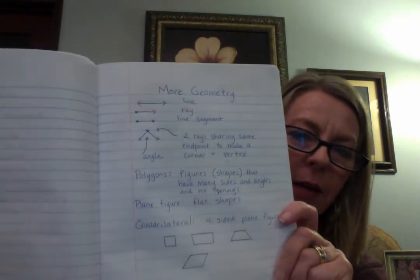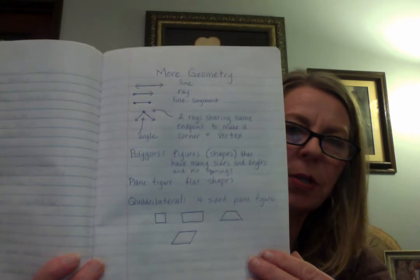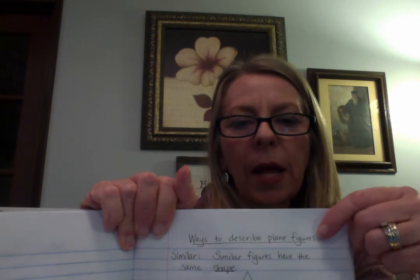Okay, time for math. Please get your math journals out. We've got a little bit of writing to do. It's great when we have a video that you can stop and write at your own pace — it doesn't matter if it's a long or short thing to write. So we are going to use the next page of our journal and write: 'Ways to Describe Plain Figures.' That's the title.